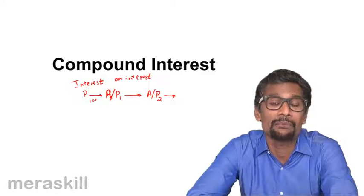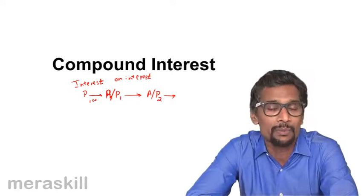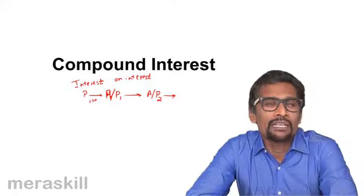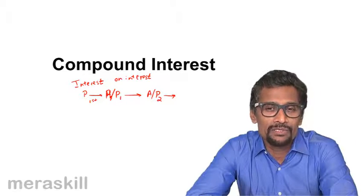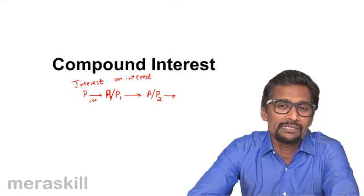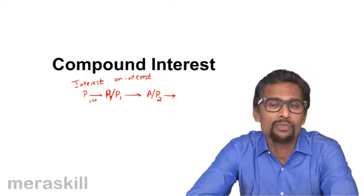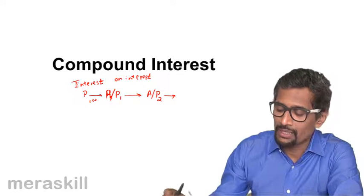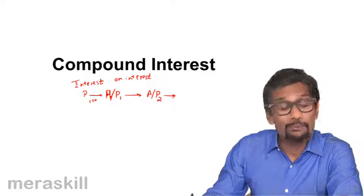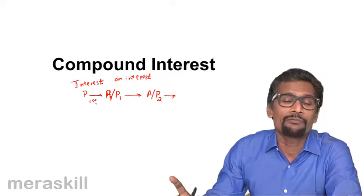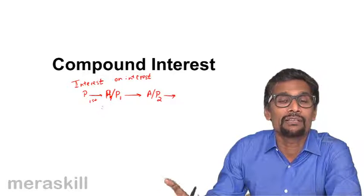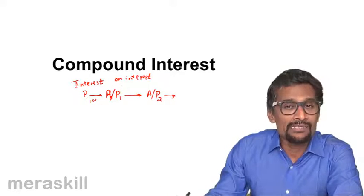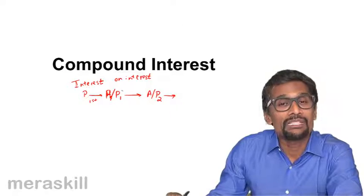Definitely, if the interest rate remains the same, the amount of interest earned in compound interest is more than in simple interest. So often, in practical life, simple interest rates are higher than compound interest rates, just to compensate for the lack of earning interest on interest. One very important point: for the first year, simple interest and compound interest are one and the same if the principal and rate remain the same. The difference starts arising only from the second year onwards.